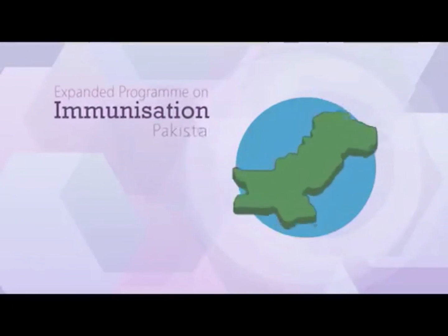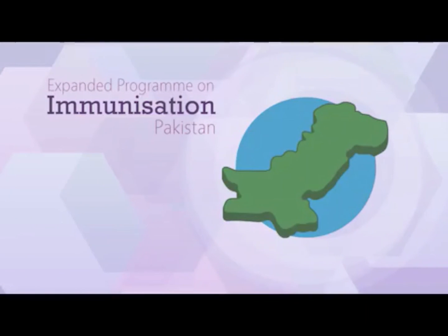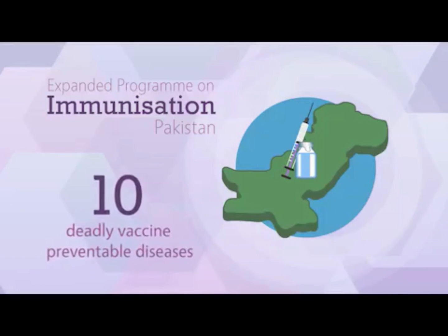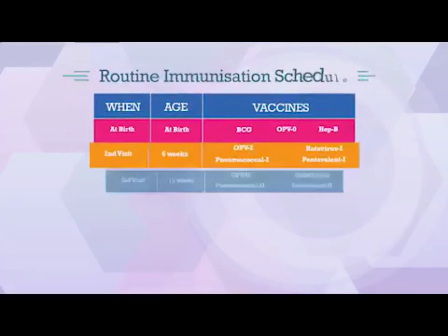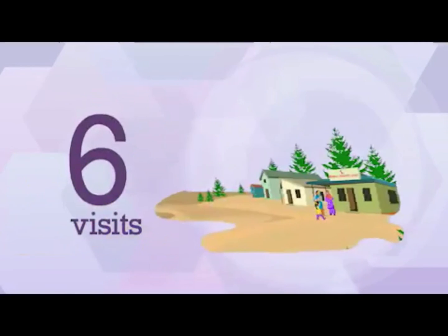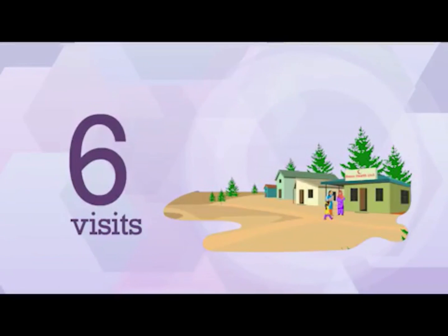The expanded program on immunization Pakistan provides free vaccines for children to protect them from 10 deadly vaccine-preventable diseases. EPI has developed an immunization schedule for children from birth till 15 months of age, which includes six visits to a public health facility.